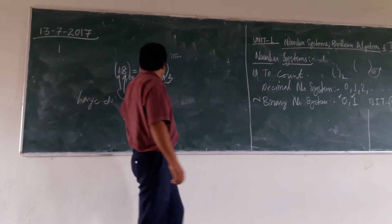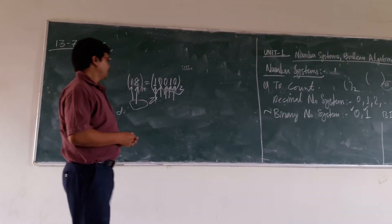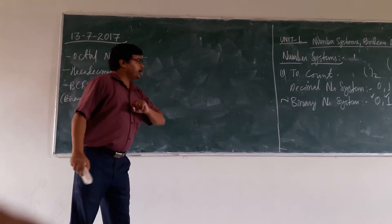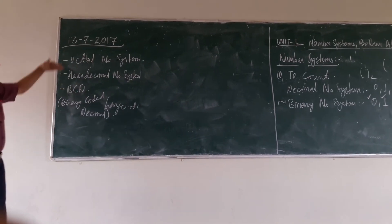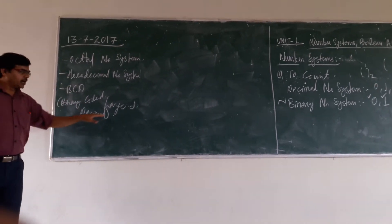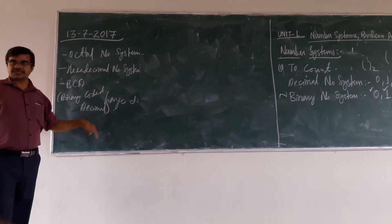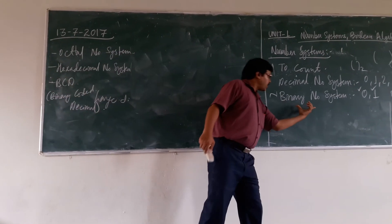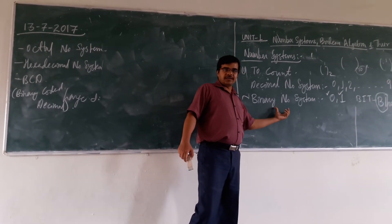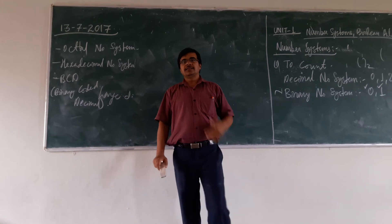So, as the large number of digits is a problem with binary, we have other optional number systems as well. We are having the octal number system, we are having the hexadecimal number system, and we are having the BCD number system. BCD stands for Binary Coded Decimal. These number systems will compress the binary number system — whatever number you have in binary, representing it in octal, hexadecimal, or BCD will compress it.